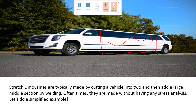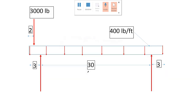Let's simplify and learn some shear force and bending moment diagram analysis on this piece of vehicle. I've simplified it and assumed the weight is distributed — it's designed for 20 people. There's lots of luxury items inside, so every foot carries about 400 pounds. In the front, the engine and transmission carry about 3000 pounds as a concentrated load, supported by two wheels.